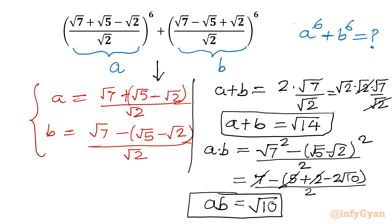So a + b = √14 and a × b = √10, and we are going to calculate a⁶ + b⁶.